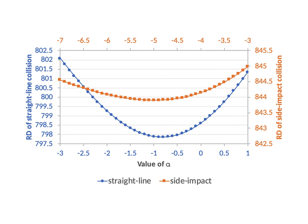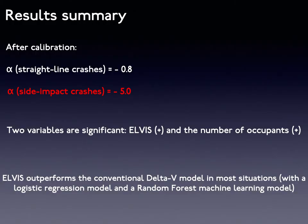From the results, we found that the values of alpha with the minimum residual deviance are negative 0.8 for head-on and rear-end crashes, and negative 5 for side impact crashes. The values are both negative, which means heavy vehicles take more advantages in crashes. Occupants in heavy vehicles suffer less significant injuries. This effect is more significant in side impact crashes rather than straight-line crashes, which means light vehicles are more fragile in their side structures. We also found that besides energy loss, the number of occupants is also statistically significant — high vehicle occupancy increases the likelihood that some occupants are seriously injured.